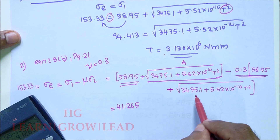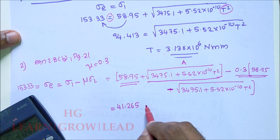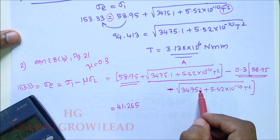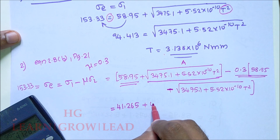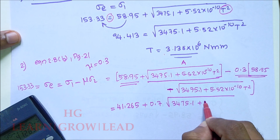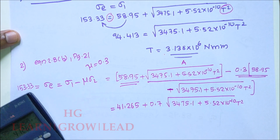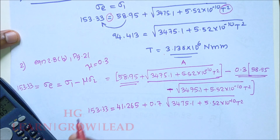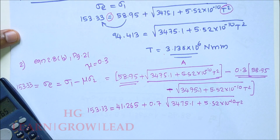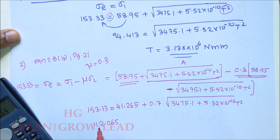With mu = 0.4 (or 0.3), the expression becomes: 153.33 − 41.265 = 112.065. Dividing by 0.7 and squaring gives the value equal to 3475.1 + 5.52 × 10⁻¹⁰ × T², from which T can be solved.